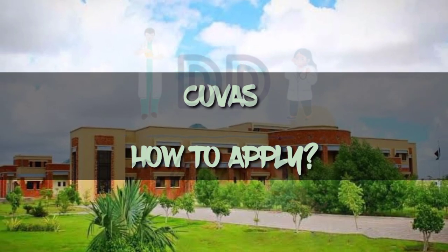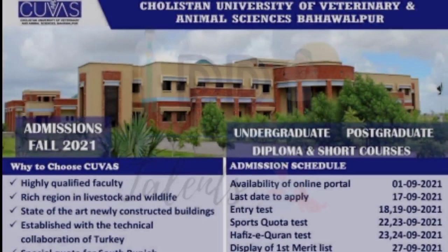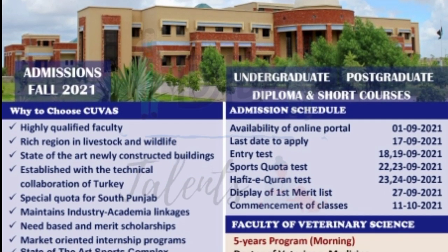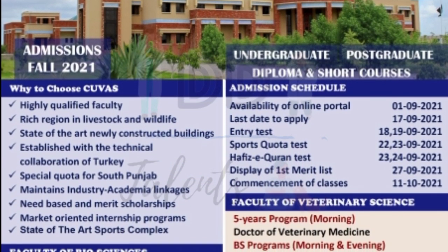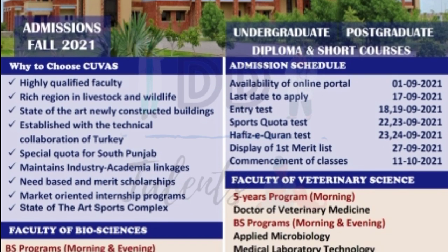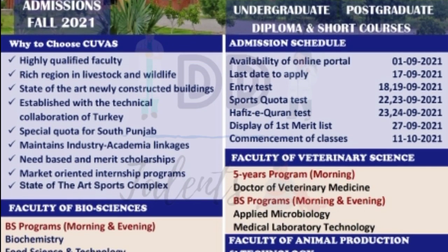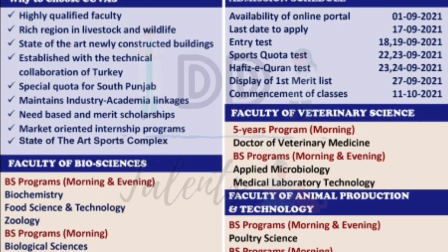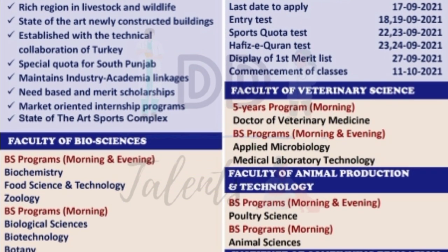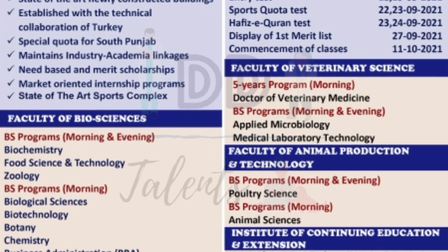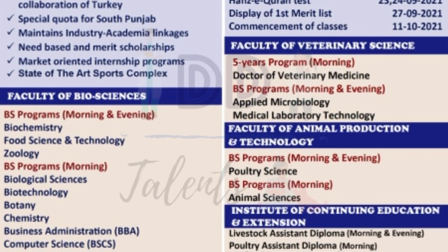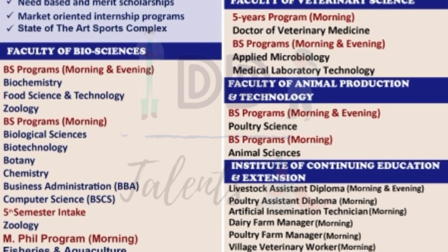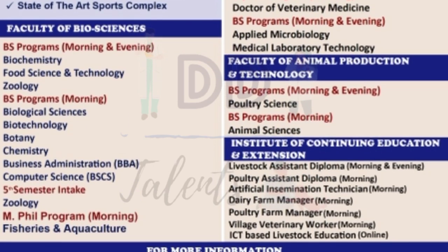Many students make mistakes. When admissions open, there is a poster showing which programs are open and the admission schedule. The dates are 1–17 and 18–19, and the first merit list will be displayed on 27th September and 11th October. Departments open for admission include Veterinary Sciences, Biosciences, Animal Production, and Education and Extension.